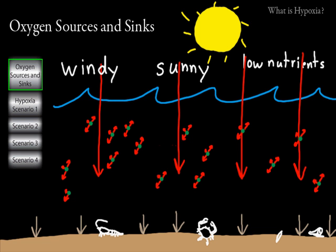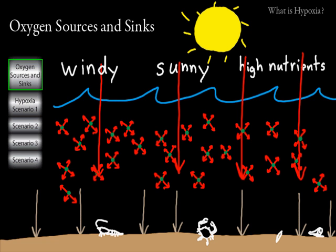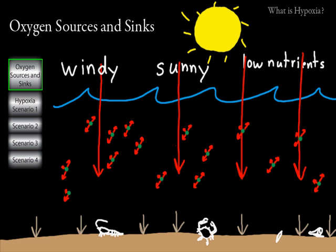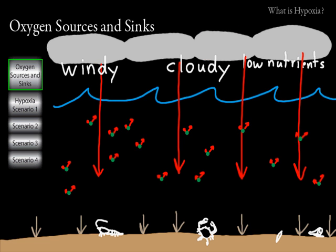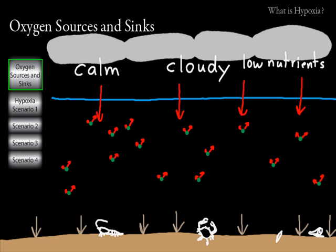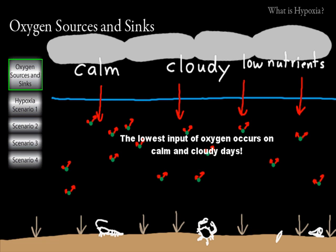On a windy, sunny day you should get a lot of oxygen in the water compared to a calm, sunny day. A windy, sunny day with high nutrient input means the algae are able to grow and reproduce better — you'll have more algae and more photosynthesis. Nutrients input from the atmosphere, from rainfall, and from rivers affect phytoplankton growth and therefore how much oxygen they produce. On a cloudy day, you'll have less sunlight and less photosynthesis, and a calm, cloudy day gives the lowest input of oxygen to a system.